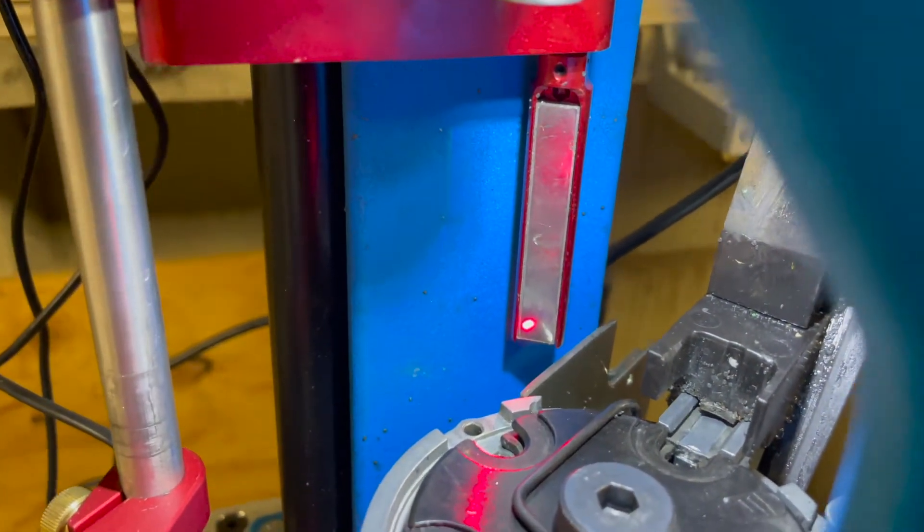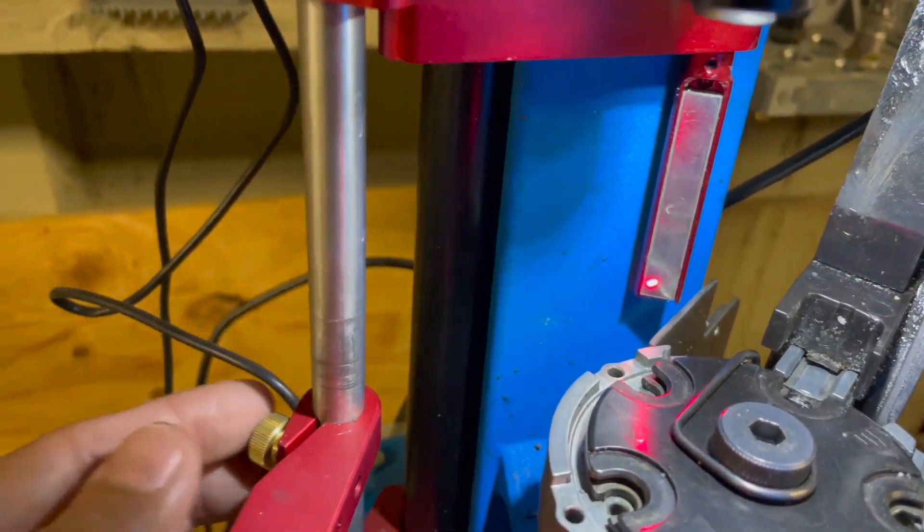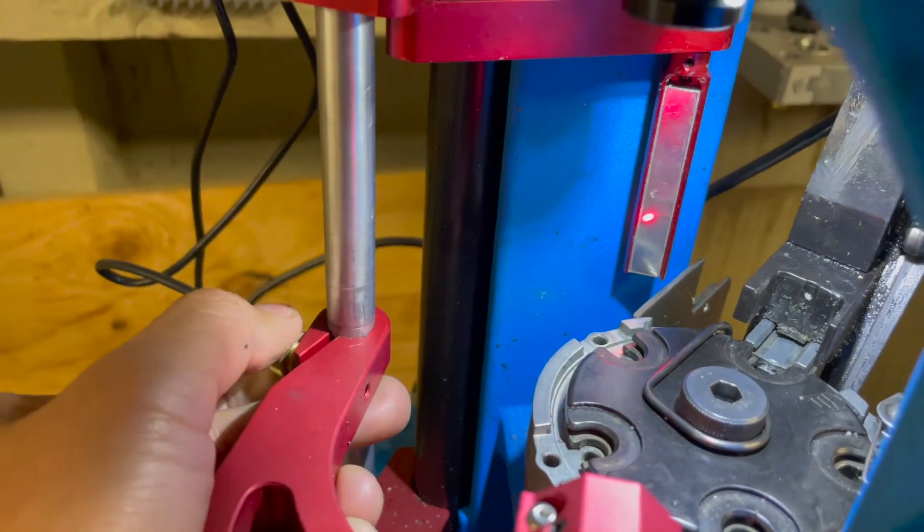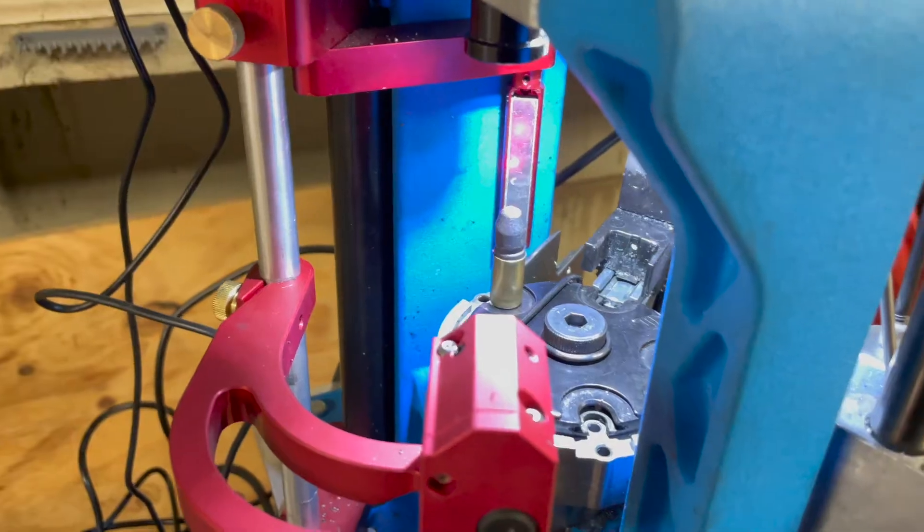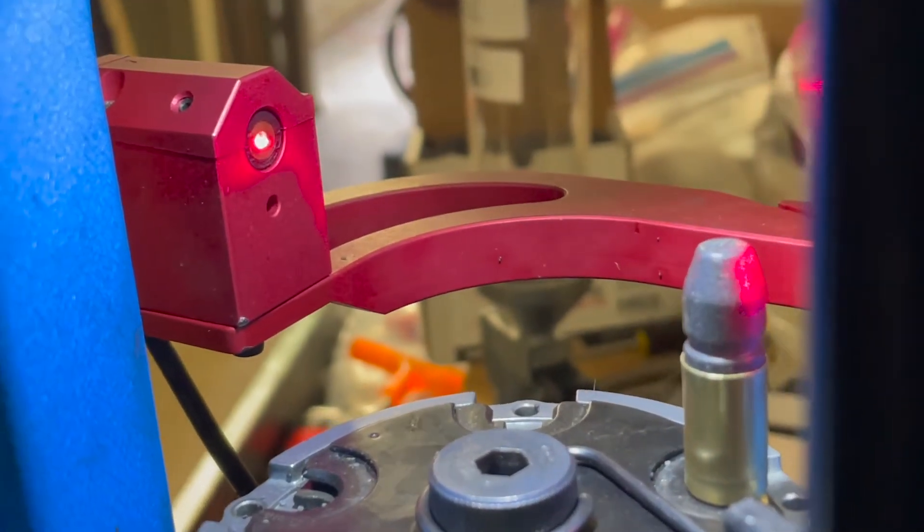Once you set up this mirror to get the correct station that you want—and for me it's in station five—all you need to do is adjust this up or down based on the bullet that you have. Here's how it looks like when it's set up correctly. You can see that the shadow is blocking the laser.